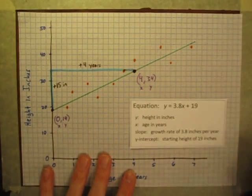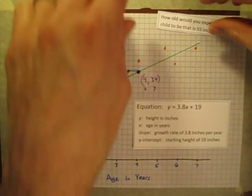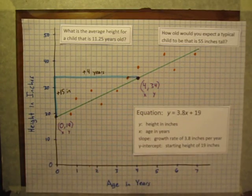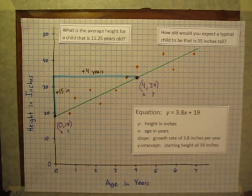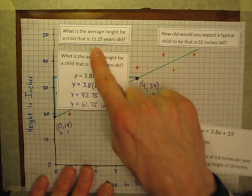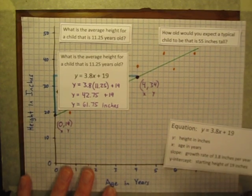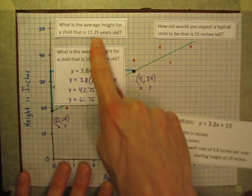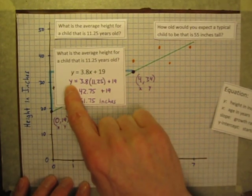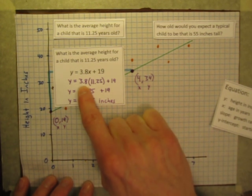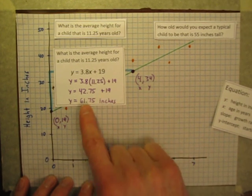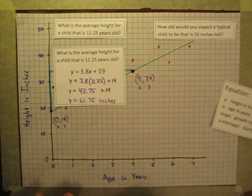So now we can use this equation to answer these questions that we couldn't answer before. These two were off the charts. So let's use the equation. If the child is 11.25 years old, I'm going to put 11.25 years. Those are x values. So I'm going to put 11.25 in for x. So the height y is equal to 3.8 inches per year times 11.25 years plus 19 inches at birth. And when we multiply and add, we get that child must be about 61.75 inches tall.